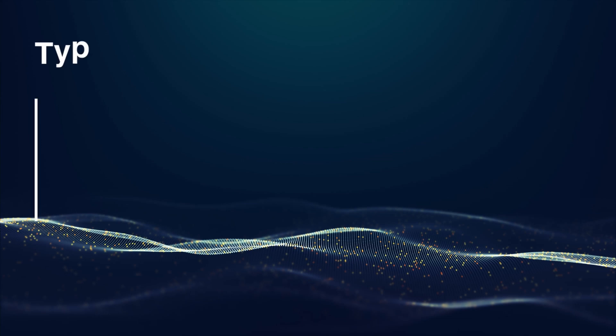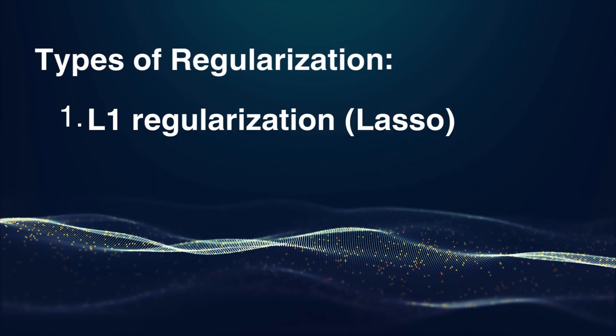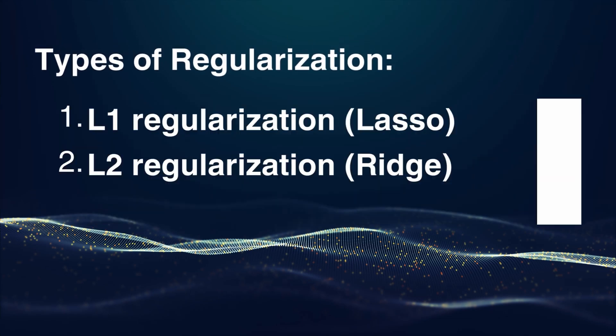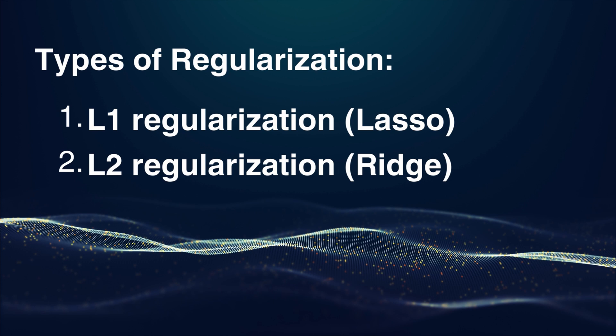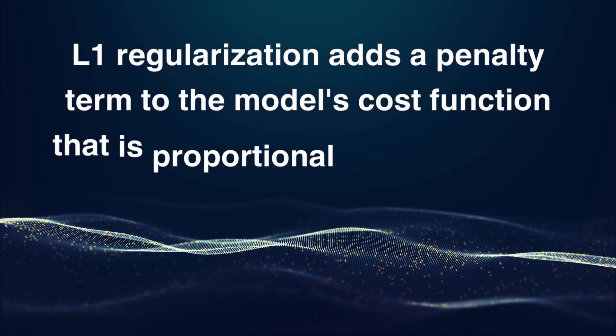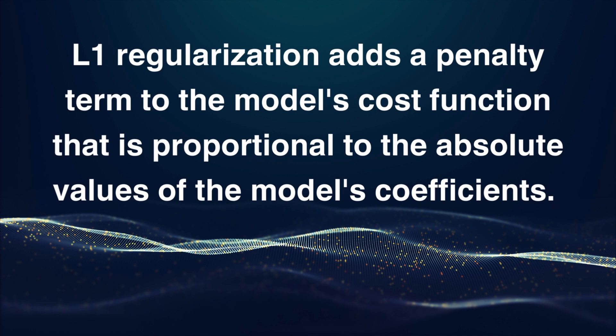There are two common types of regularization techniques. L1 regularization, also known as Lasso regularization, and L2 regularization, known as Ridge. L1 regularization adds a penalty term to the model's cost function that is proportional to the absolute value of the model's coefficients. L1 regularization is often used when you have a high-dimensional dataset with many features and you suspect that only a small subset of those features is relevant for making predictions.